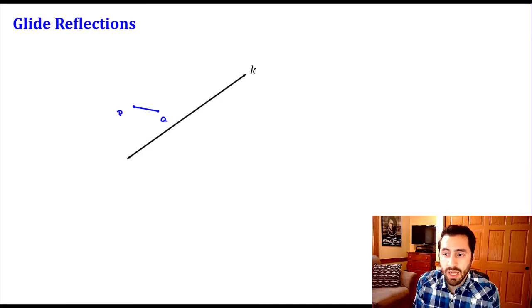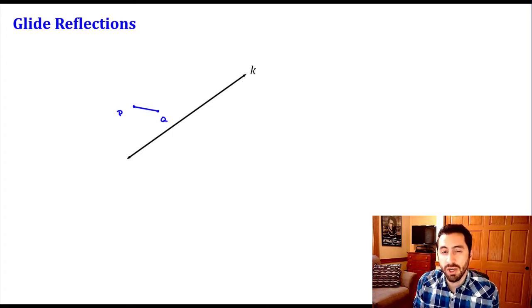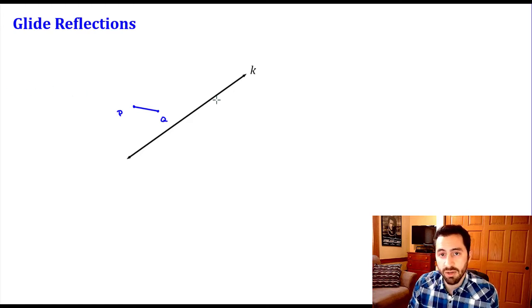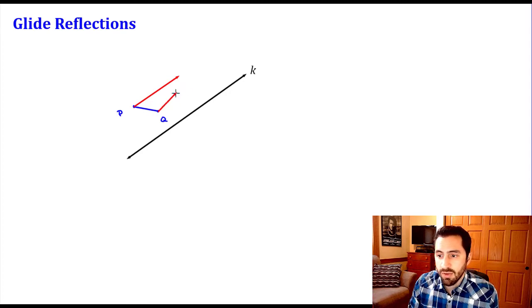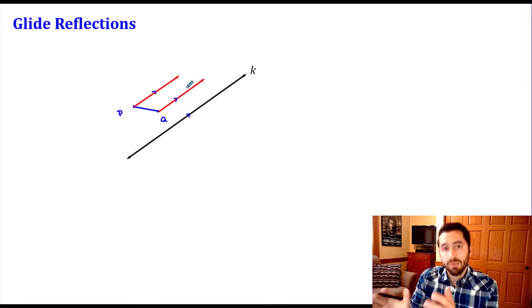To give a better idea of what this looks like, let's take an example. I have segment PQ, and I want to perform a glide reflection on it. The first step is a translation — specifically, a translation parallel to our line of reflection. So I'm going to take point P and slide it in a direction that is parallel to my line of reflection, and the same thing for Q.